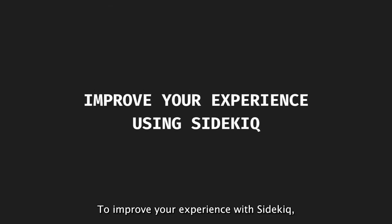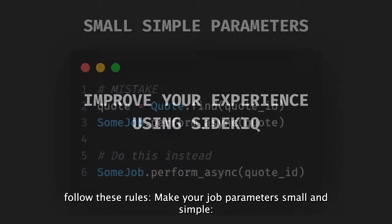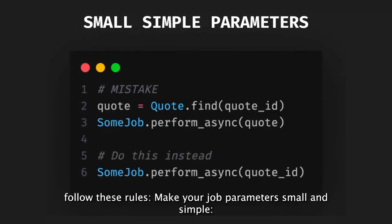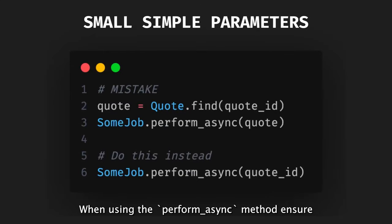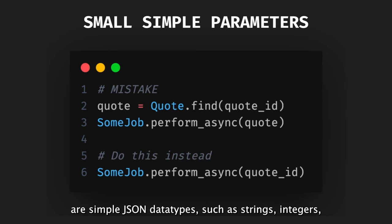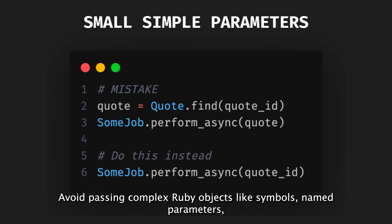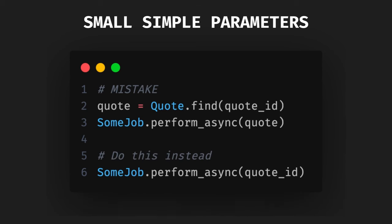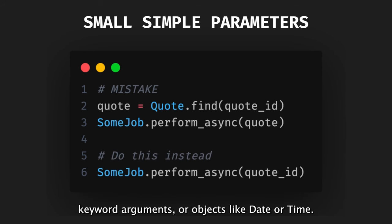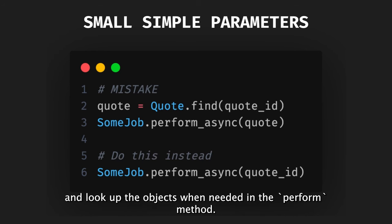To improve your experience with Sidekiq, follow these rules. First, make your job parameters small and simple. When using the perform_async method, ensure that the arguments passed are simple JSON data types, such as strings, integers, floats, booleans, nulls, arrays, and hashes. Avoid passing complex Ruby objects like symbols, named parameters, keyword arguments, or objects like Date or Time. Save simple identifiers instead, and look up the objects when needed in the perform method.